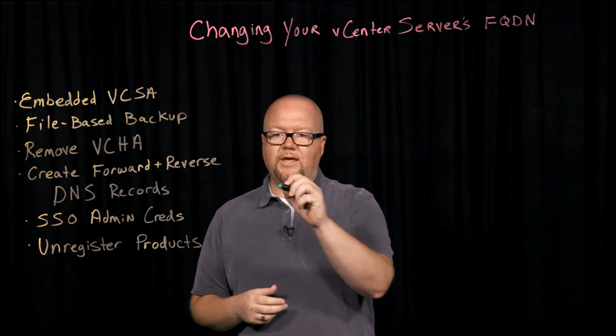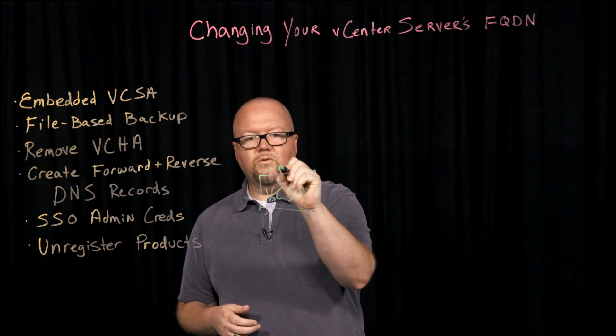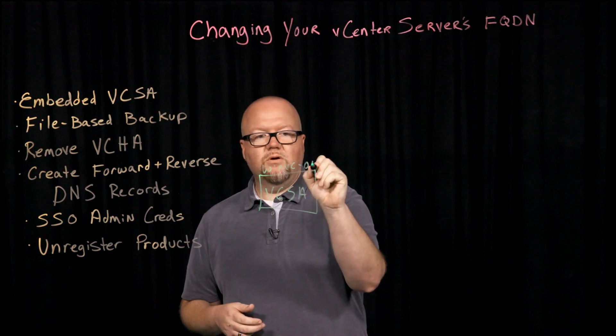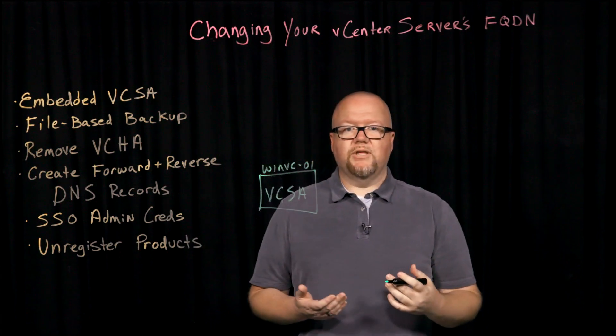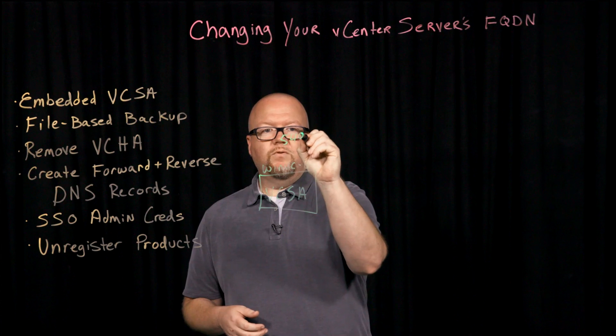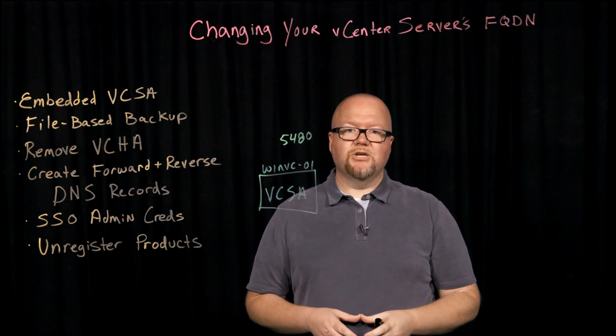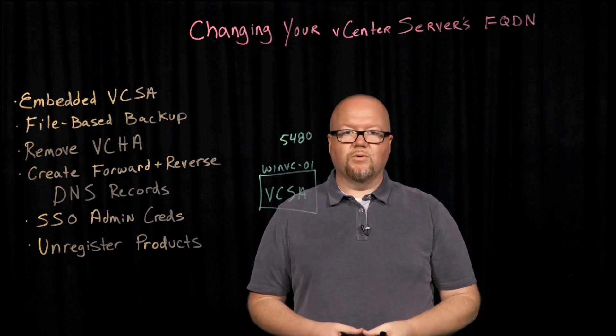Now let's imagine that we had a Windows vCenter server that was migrated over to the appliance, and we retained the name and we want to change that name. We have our vCenter server appliance, but it has a leftover name — winvc01 — and we want to change that. In vSphere 6.7 Update 3, we now have that capability to make that change by visiting port 5480, which is our VAMI or vCenter Appliance Management Interface screen, and making that change through our network settings.